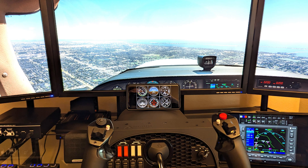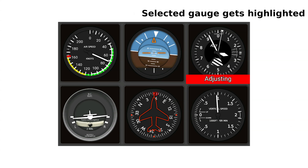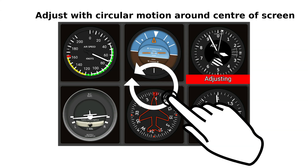To make adjustments, you can either do them in X-Plane using your mouse, or by using buttons and switches that you might have configured on a controller, or you can use the touchscreen on the app itself. The changes will be reflected in the app and X-Plane, no matter where you make them — in the sim or on the app. It's pretty cool. To use the app to make adjustments, simply tap on the gauge that you want to adjust. It will then become highlighted, and you can make adjustments using the touchscreen on your device with a circular motion around the center of the screen.